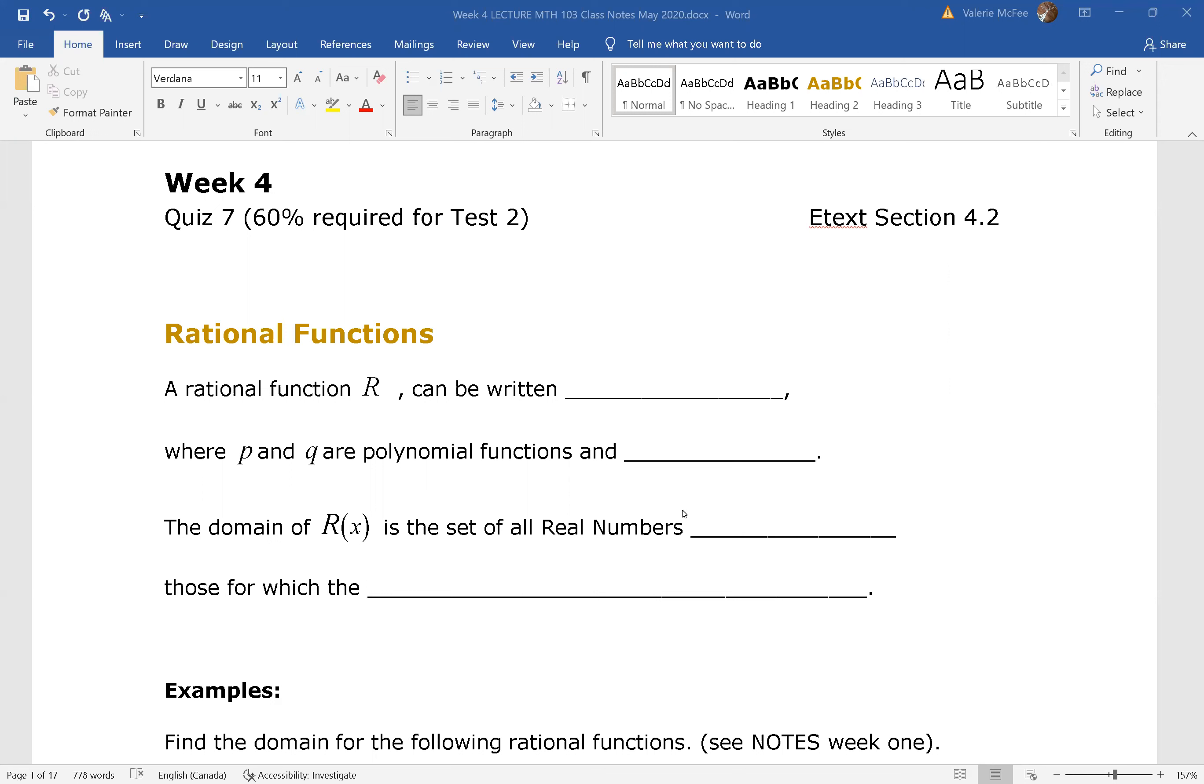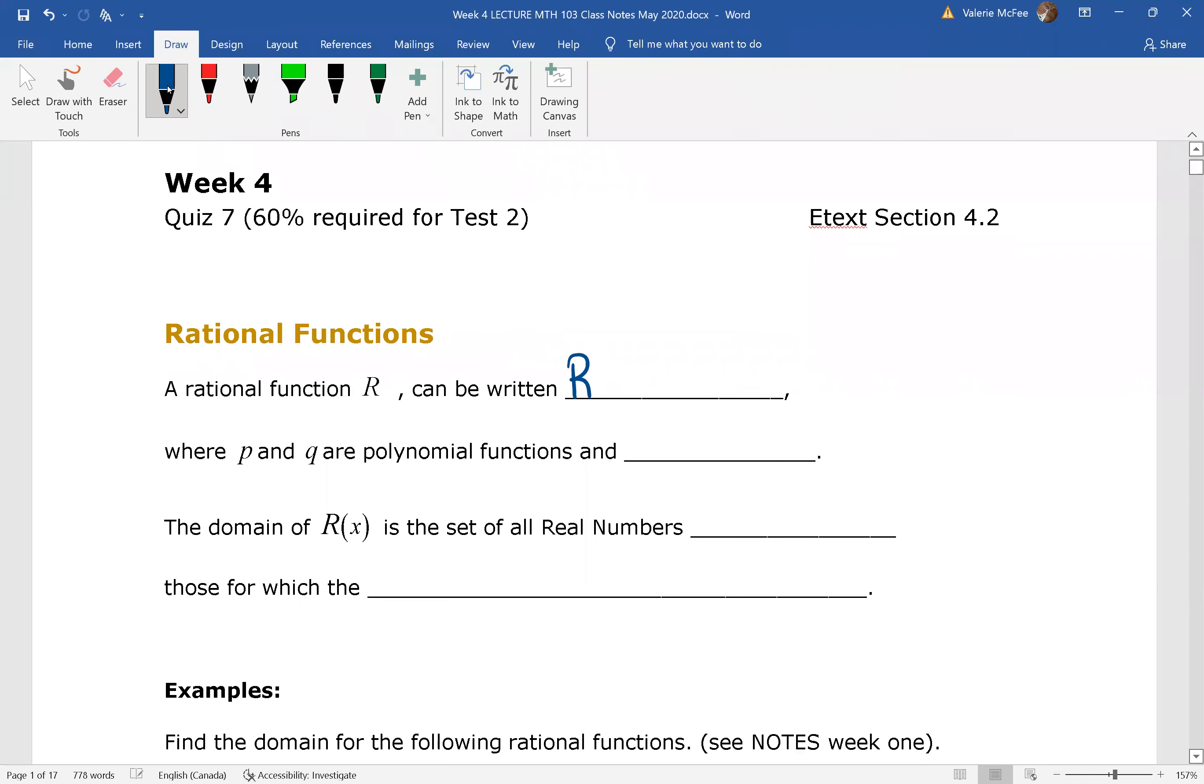Now we've already looked at rational expressions. Today we want to look specifically at rational functions. Remember when we have a rational function, we're going to say that R(x) is equal to P(x) divided by Q(x). P and Q are both polynomial functions, and Q(x), the denominator, cannot equal zero.